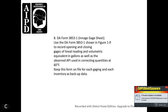DA Form 3853-1: Ingage Gauge Sheet. Figure 1-9 shows the form used to record opening and closing gauge readings, the linear reading with metric equivalent in gallons, the observed API, and quantities corrected to 60 degrees Fahrenheit. Keep this form on file for each gauging and each inventory as backup data.